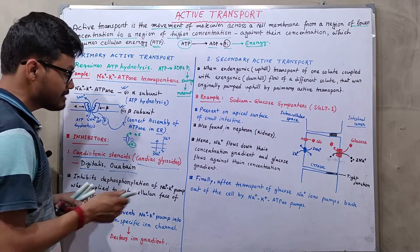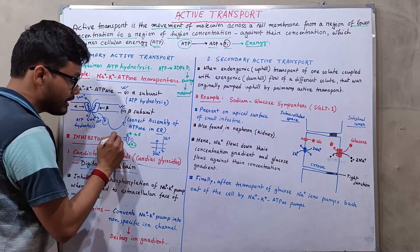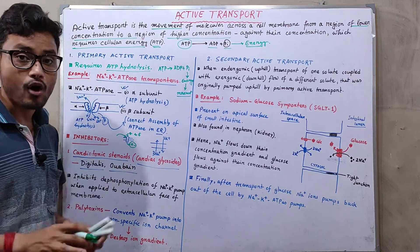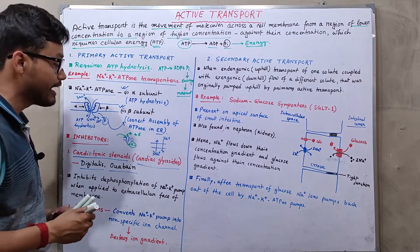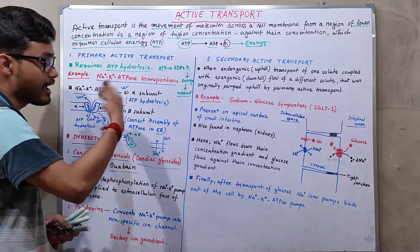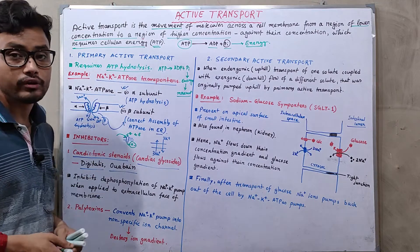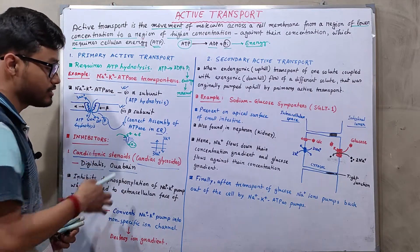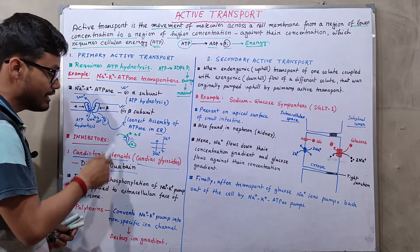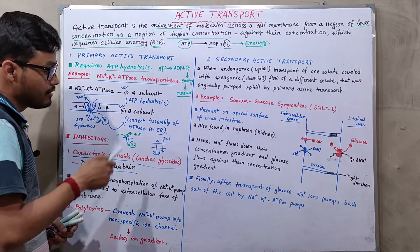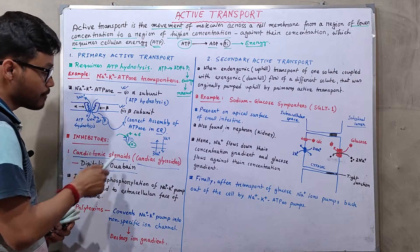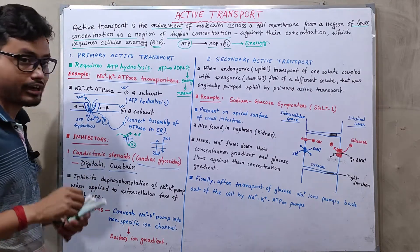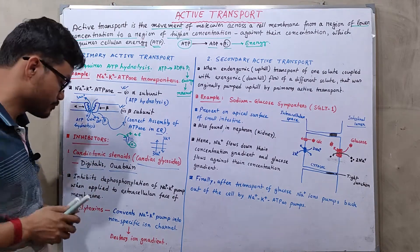As a result, the transporter channel is blocked and it cannot move sodium or potassium ions against their concentration gradient. Basically, these inhibitors inhibit the function of the sodium-potassium ATPase transporter.